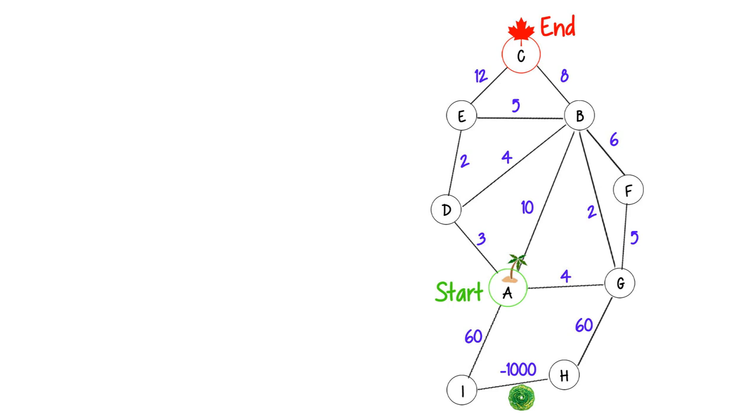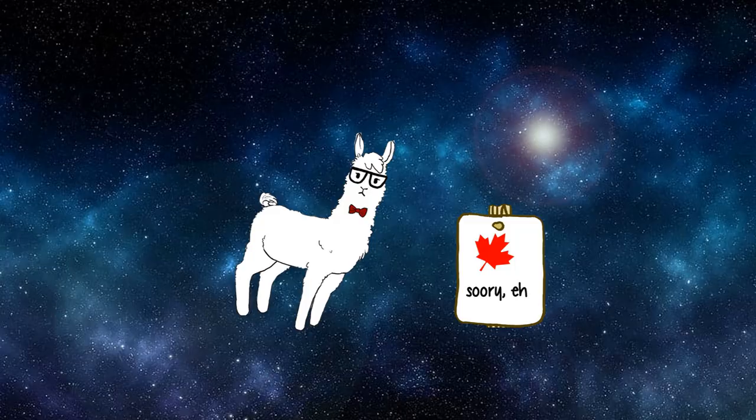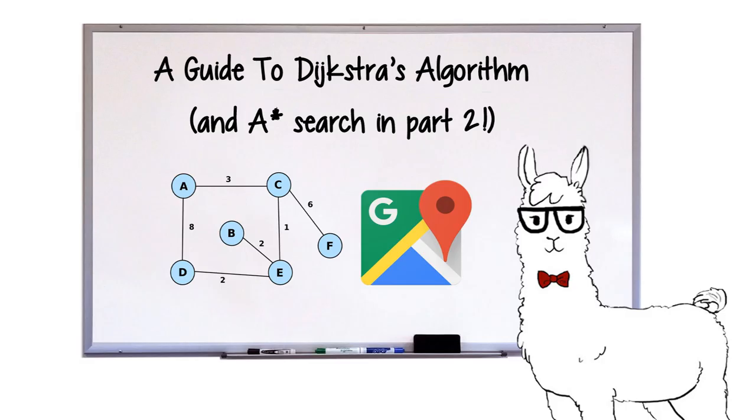For example, here, Dijkstra's will tell us that the fastest path is still this way, and it'll take you 14 hours, when in reality, you can just cycle around here for a while, and then arrive in Canada at the beginning of time.